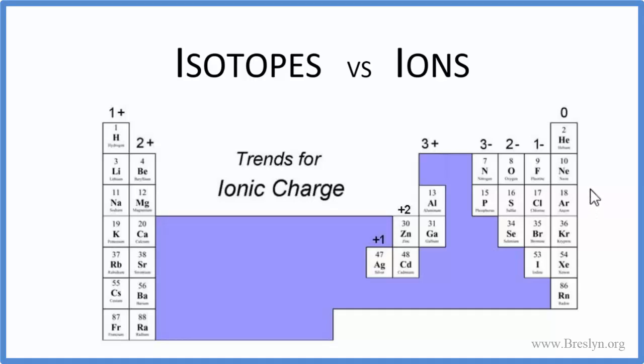One thing to note is that it's pretty easy to make ions — it's very common in chemistry. Isotopes are a little different. You need a supernova, maybe a particle accelerator, or nuclear decay to form some isotopes. It's difficult to remove or add neutrons to an atom, but electrons in general are fairly easy to remove, since they're on the outside of the atom.